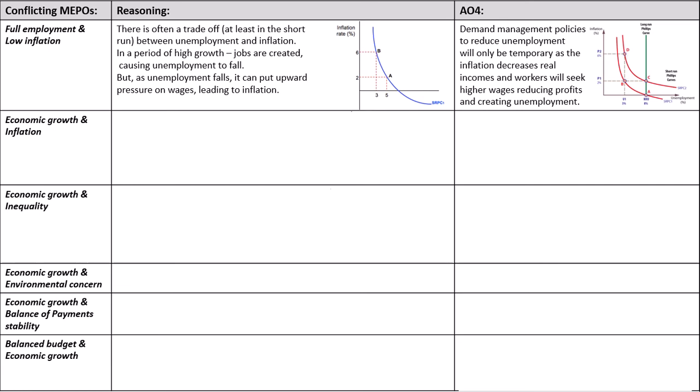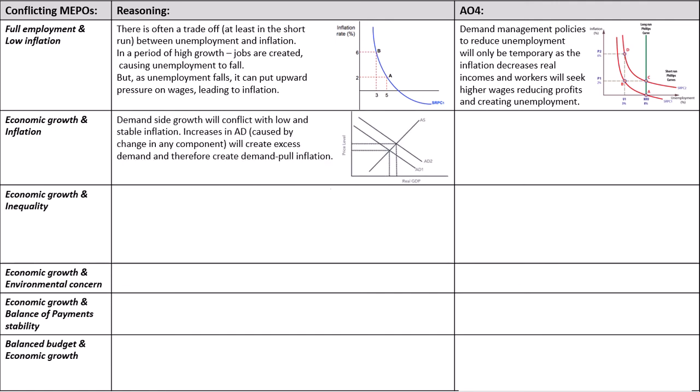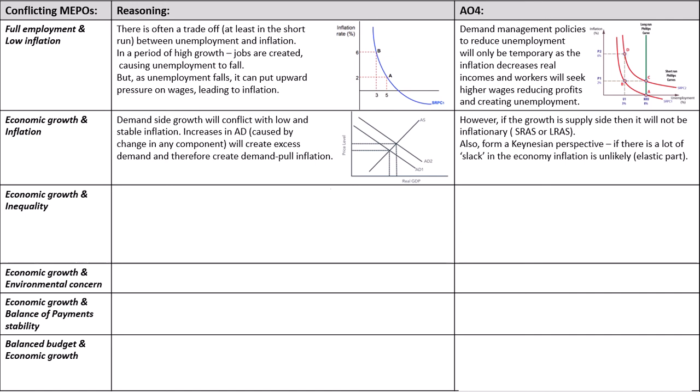Economic growth and inflation — have a go at explaining how they conflict. Hopefully you've got the idea of demand-side growth: if AD increases, as you can see in a classical diagram, that should obviously cause inflation. For AO4, Keynesian theory would suggest that if there's a lot of slack within the economy, economic growth doesn't necessarily mean there will be inflation if you're on the elastic part. Also, if growth is brought about by supply-side policies and improvements in productivity, that will not necessarily be inflationary either.